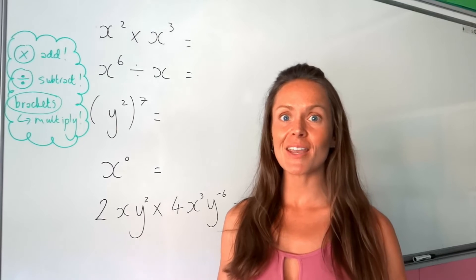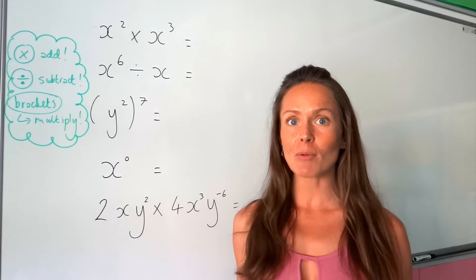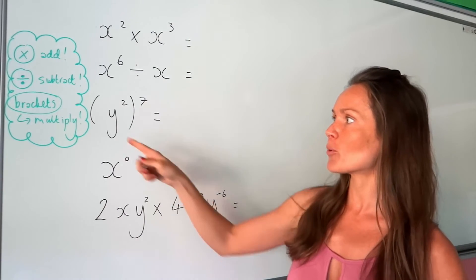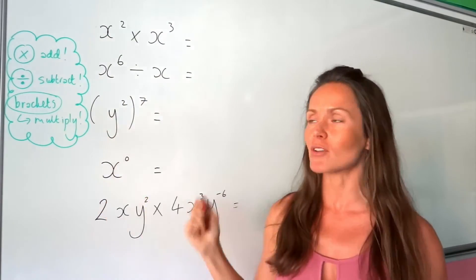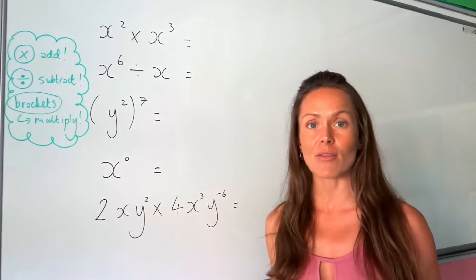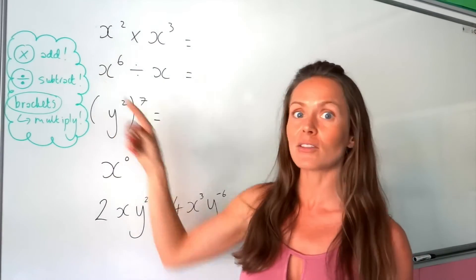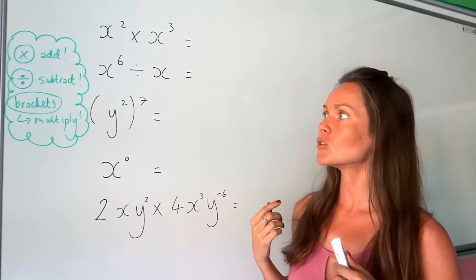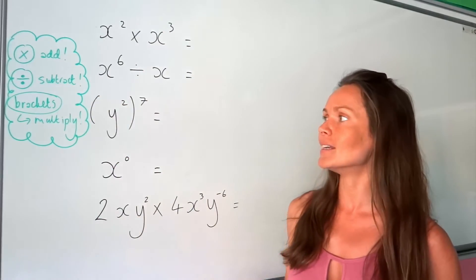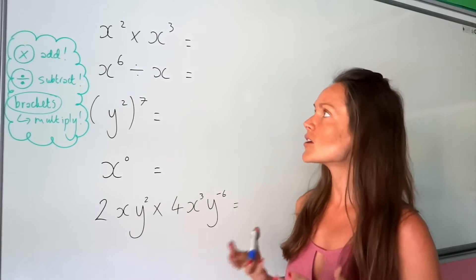Hey guys, I'm the maths prof and today I'm going to show you the rules of indices — these are the power rules you need to remember. When you're multiplying two letters or numbers that are the same, you add the powers together. When you're dividing two letters that are the same, you subtract the powers. And if you see brackets, you multiply the powers.